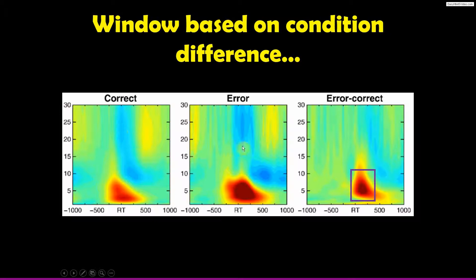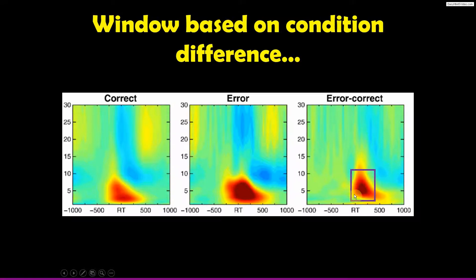Now we have conditions 'correct' and 'incorrect,' and here is the difference plot — time-frequency power for error minus correct. If we select this window from that difference plot and test the data for error minus correct at p < 0.05, that is a biased sample. We are selecting the data that maximizes the condition contrast and then statistically testing whether that effect is significant. You can imagine doing this with random data: if you picked where the random noise happened to be biggest, you'd very likely find a significant result even though it's just random noise.